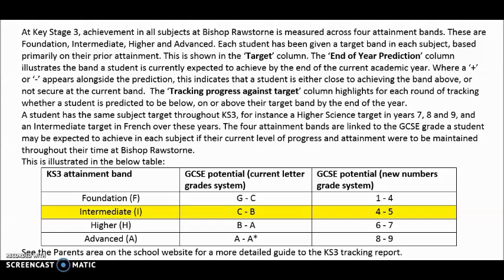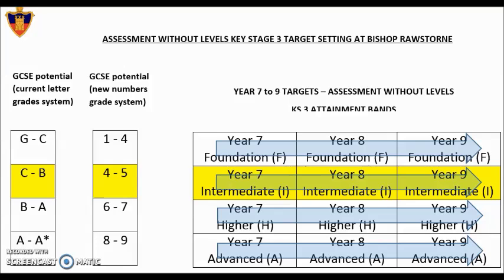A student with this type of target at GCSE would be given a Key Stage 3 target of Intermediate. Once a student has been given their Intermediate target, this will continue to be used for Years 7, 8 and 9. The expectations of Year 8 Intermediate content and success criteria is obviously at a higher level than Year 7 Intermediate content, and then from Year 8, Year 9 Intermediate content again moves students on, preparing them for their expected GCSE potential grade of a 4 or 5.